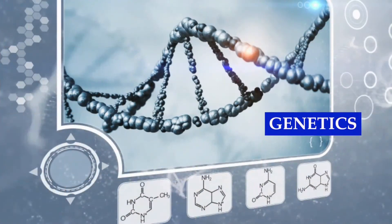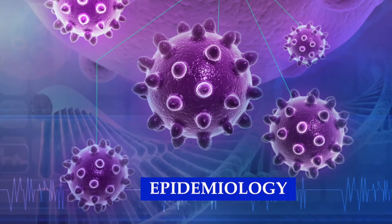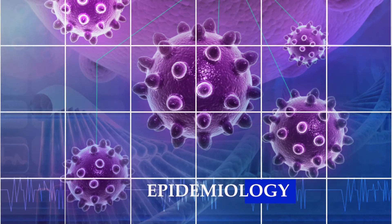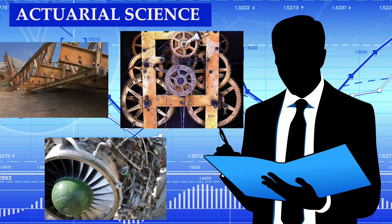Ten, genetics — Mendel's theory. Eleven, epidemiology and the spread of infection. Twelve, actuarial science — the analysis of risk in the design of actuarial tables.